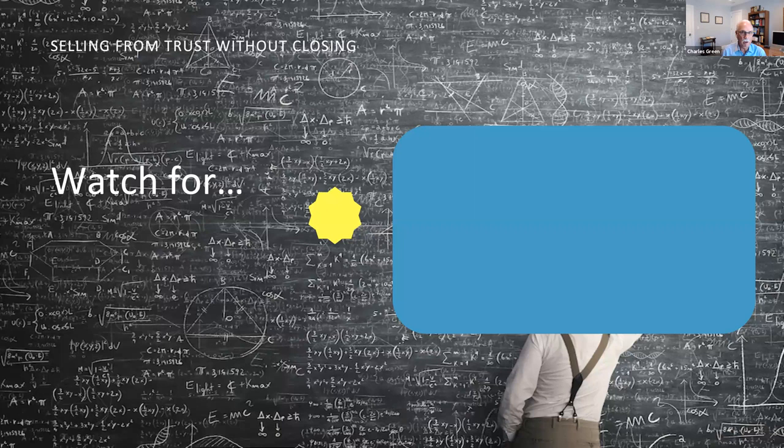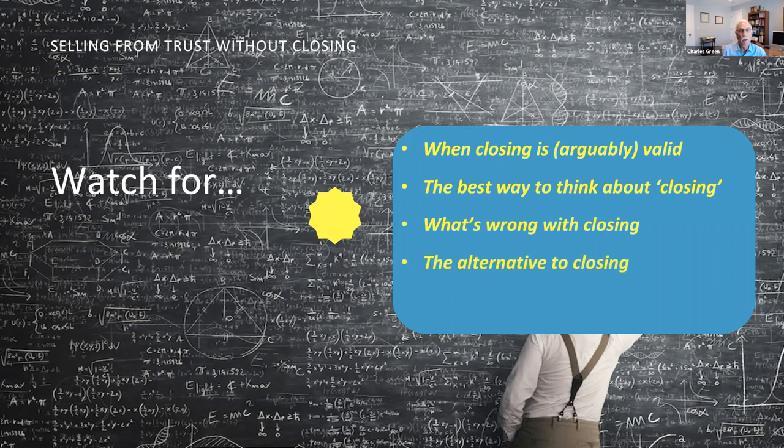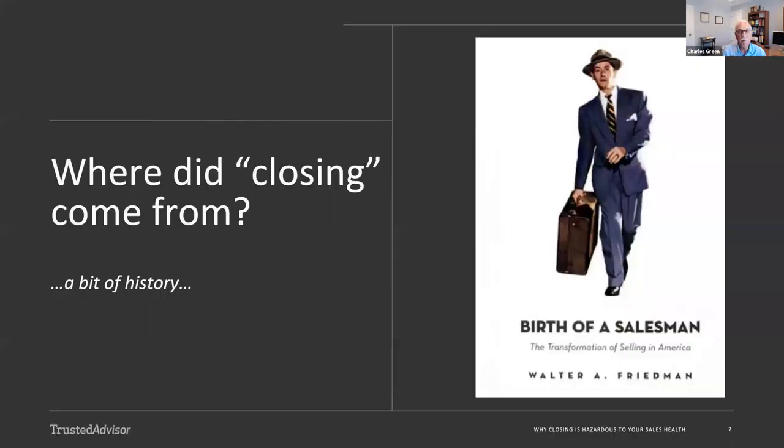As I go through here, watch for the yellow star because I'm going to make a few points. Keep an eye out for them. When closing actually is arguably valid, I'm going to say there're not many times but there are a few. Watch out for the best way to think about this whole notion of closing. What's wrong with it? What is the alternative? And what is the trick to actually selling and getting deals closed without doing all the stuff that you usually read about in closing?